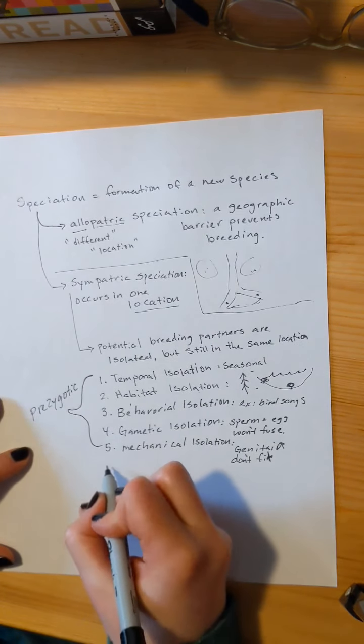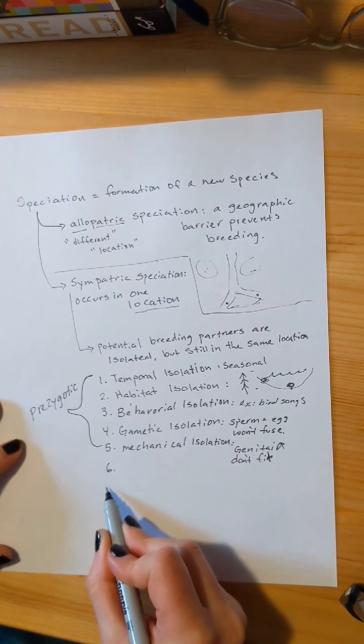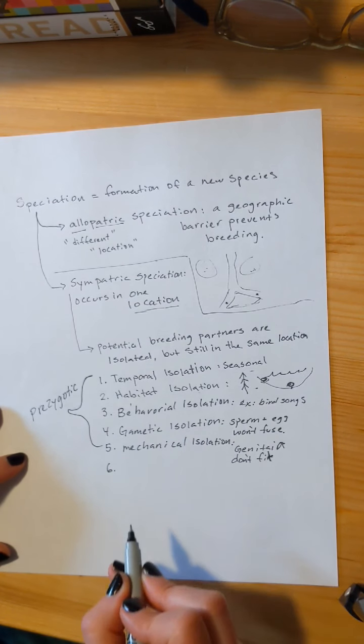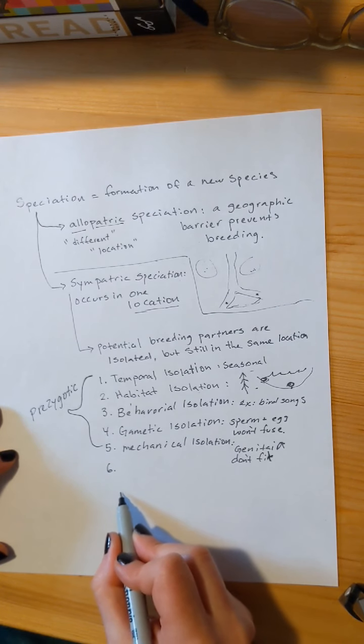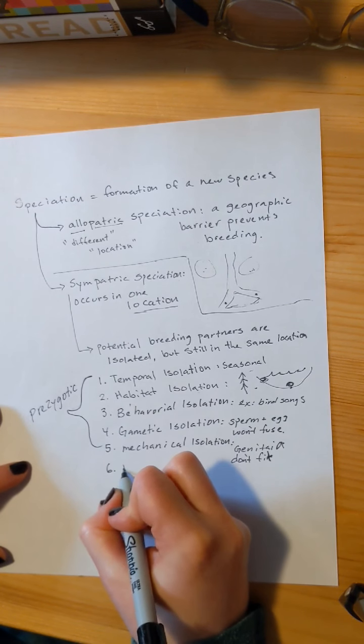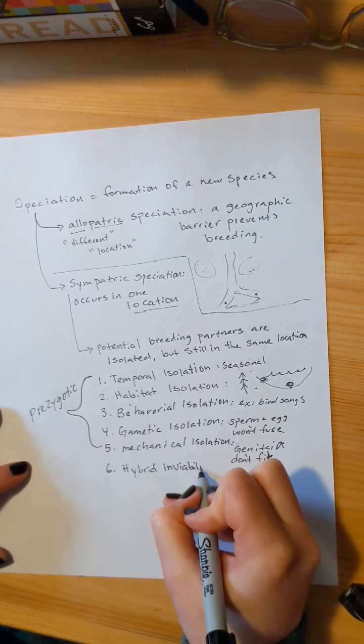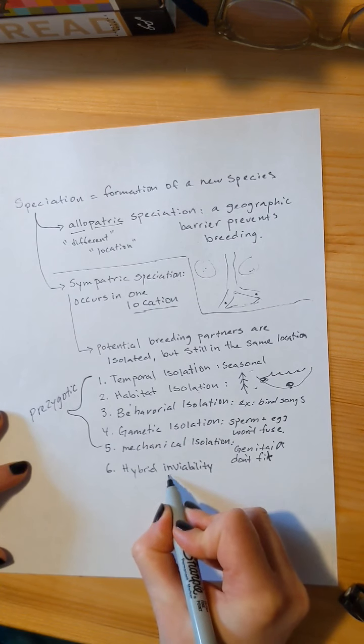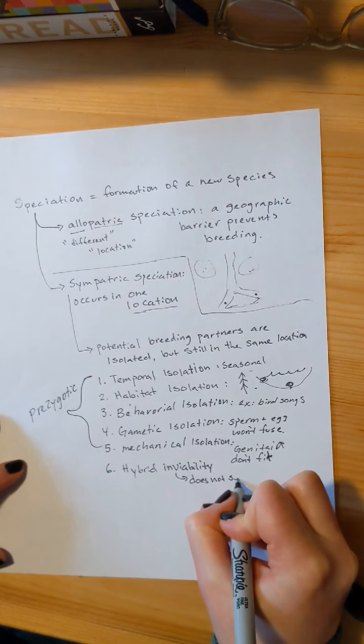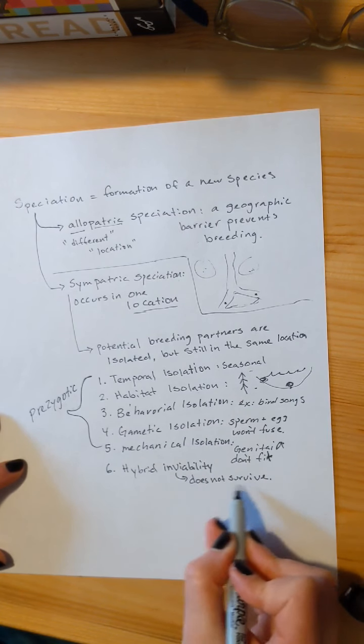There's actually postzygotic isolation too. We don't use the word isolation anymore because now your organisms have got together, and they've made a zygote. So you've had a zygote produced. There has been a mating event, but the offspring is not considered a viable offspring for one of three reasons. The first one is called hybrid inviability. Inviability means that it does not survive. This hybrid would miscarry, and it would not go to full term.